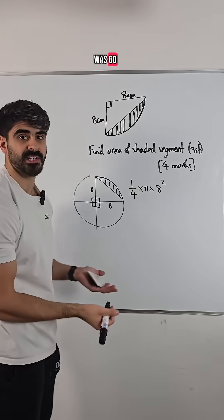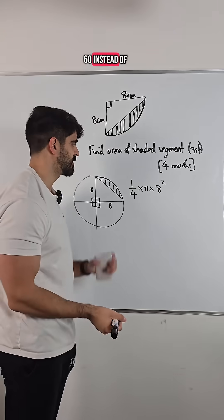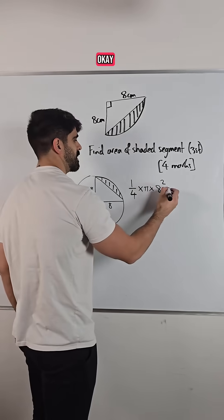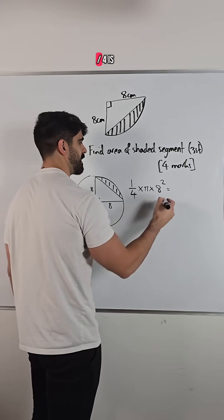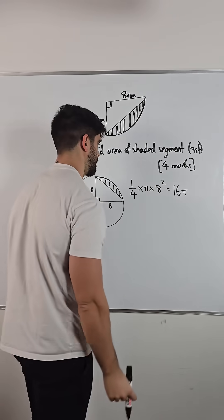If it was another angle, you'd say it was 60, you'd just do 60 over 360 instead of writing a quarter. So it's a quarter of pi r squared. Eight squared is 64 divided by four is 16 pi.